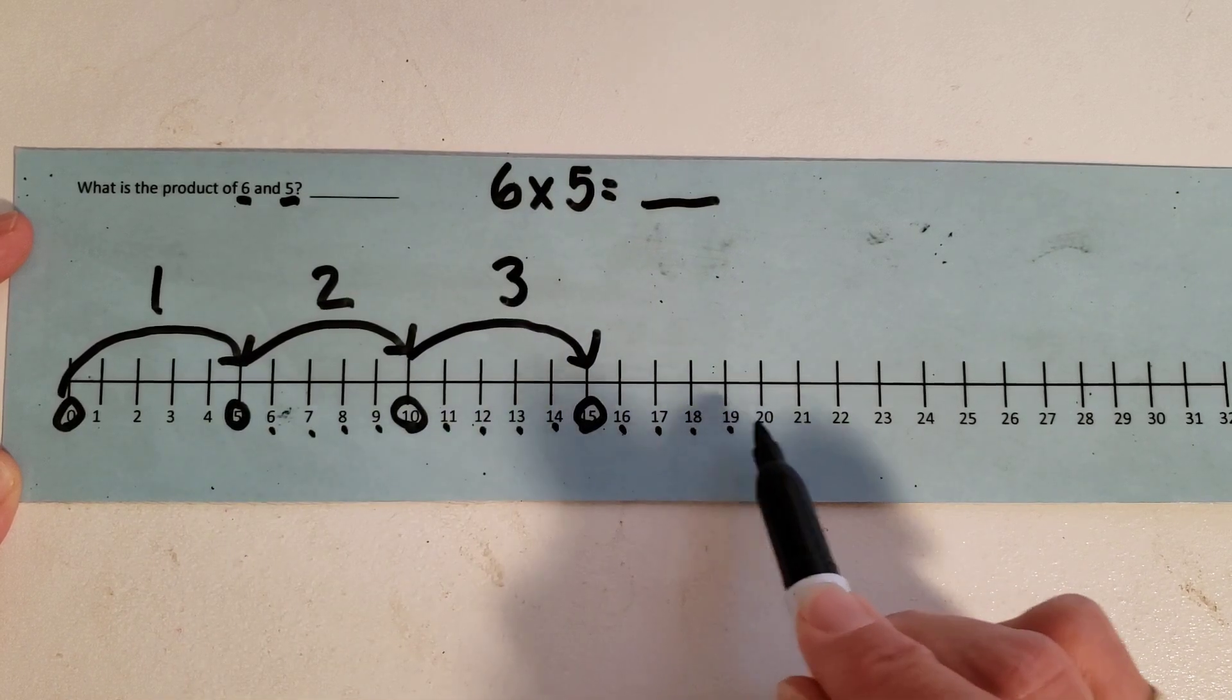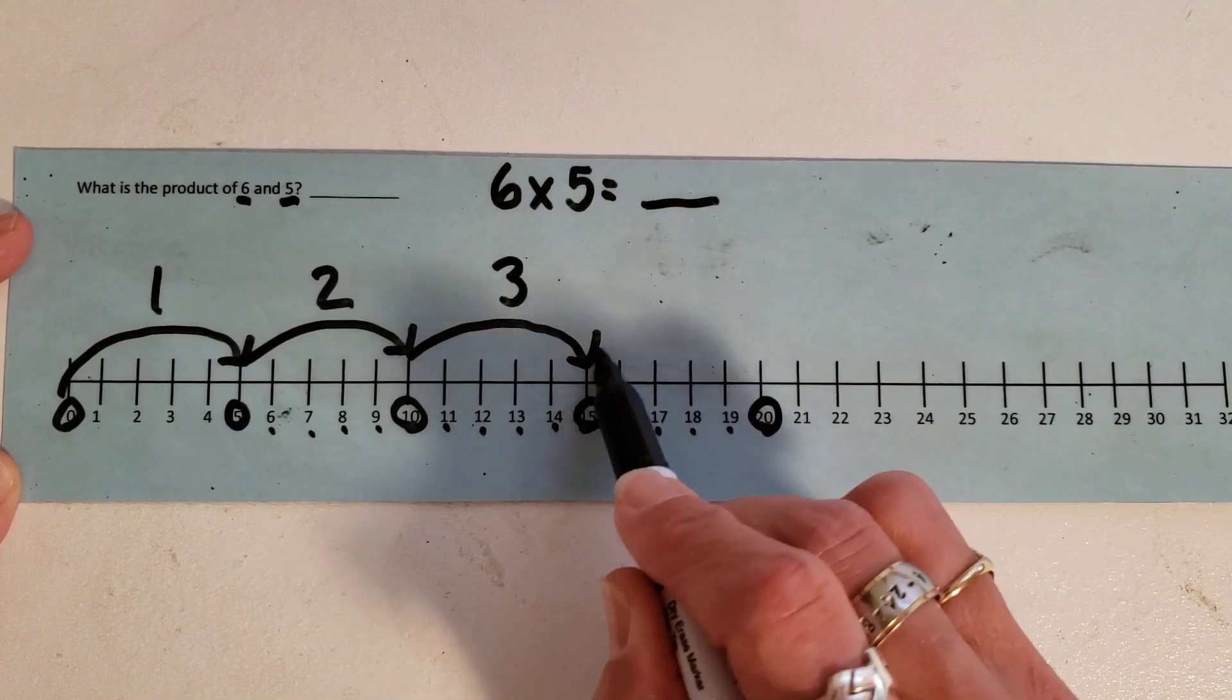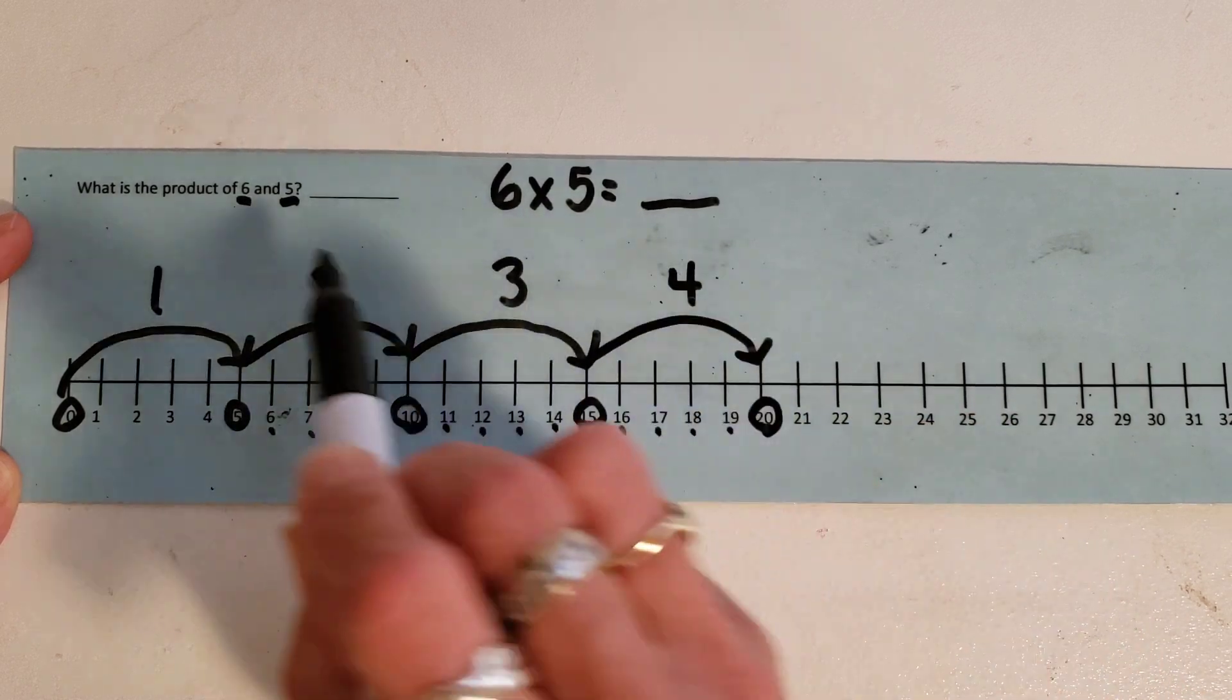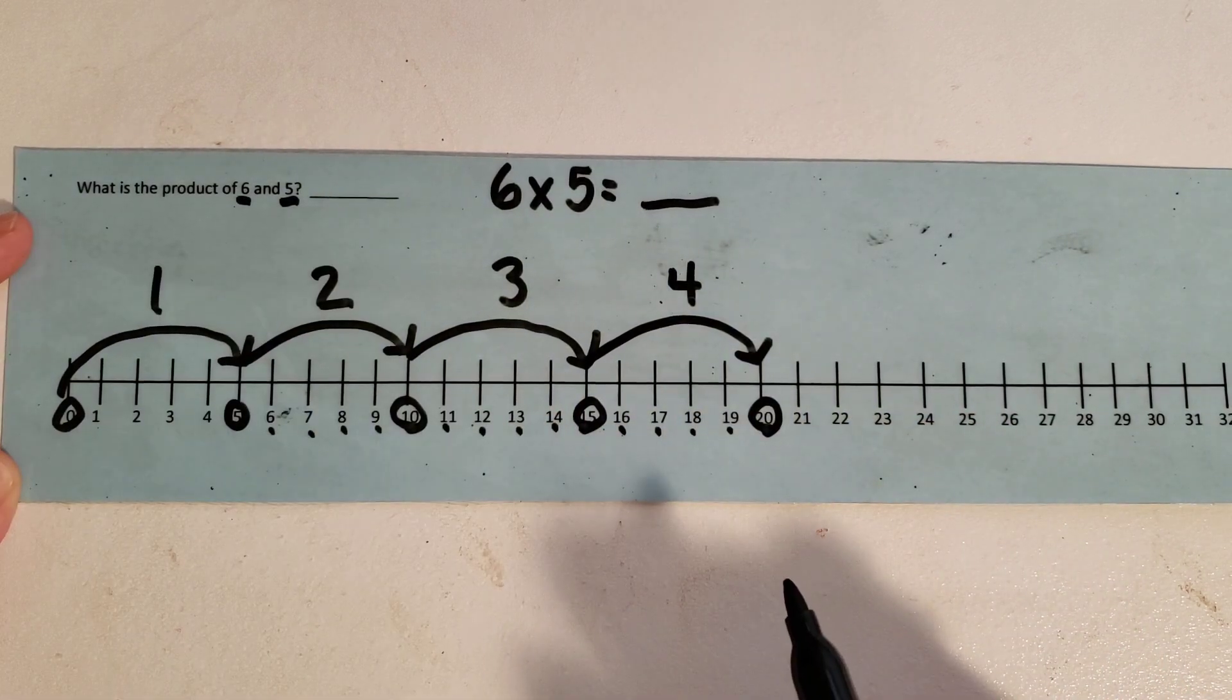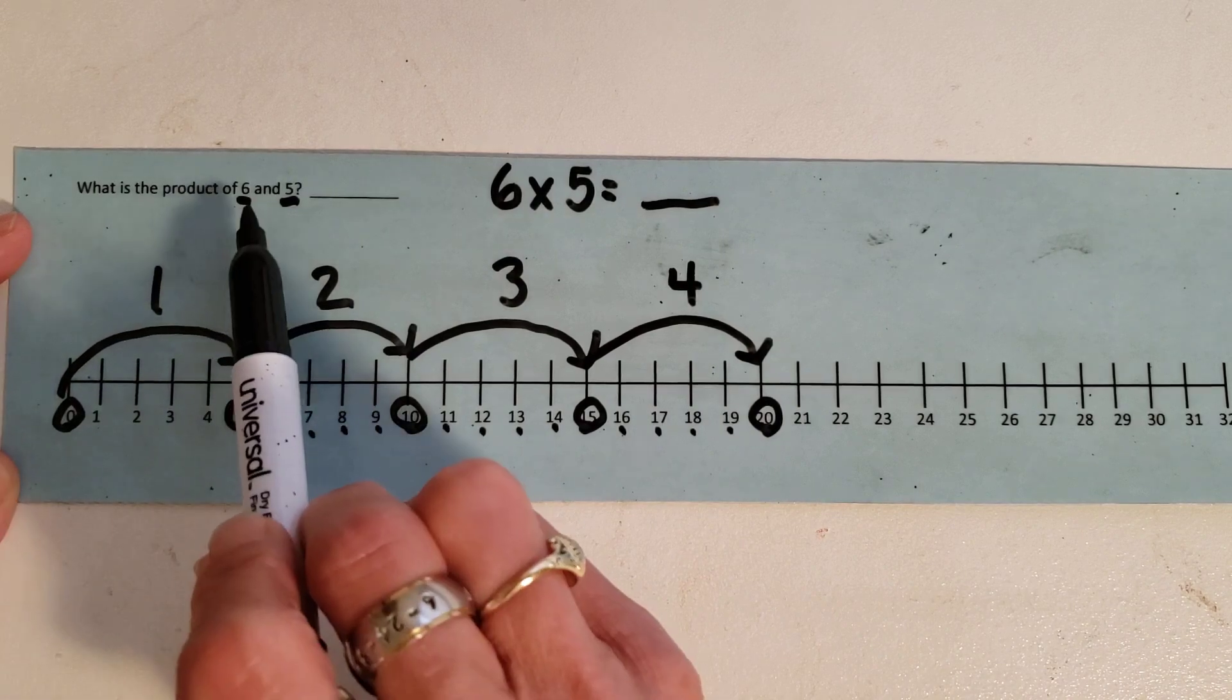One, two, three, four, five. This is going to be my fourth group. All right, remember we need to make five groups. Oh, excuse me. We need to make six groups.